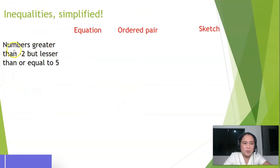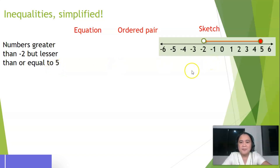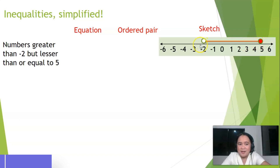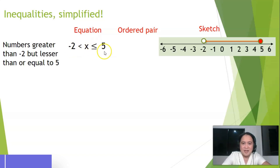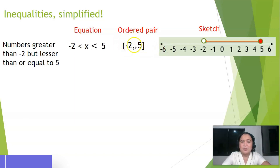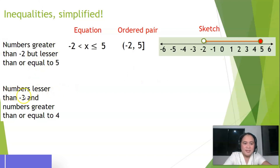Another example: numbers greater than negative two but lesser than or equal to five. When sketched, it shows an open circle at negative two and a closed circle at five, with shading between them. The equation is: x is greater than negative two but lesser than or equal to five. The interval always starts at the leftmost value: parenthesis negative two comma five bracket, because negative two is open and five is closed.